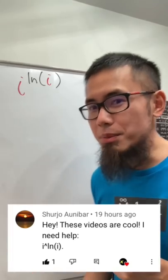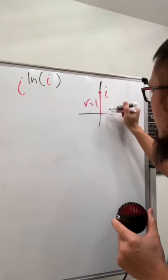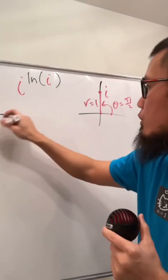First of all, for i to the i power, we need to have the polar form of i. The distance from the origin is one and the angle is π/2. Now we can write i in terms of r·e^(iθ) form, so this becomes r=1, giving us e^(iπ/2).